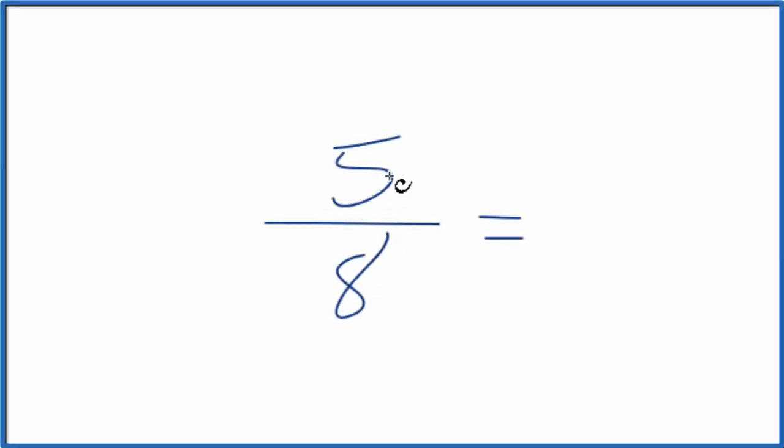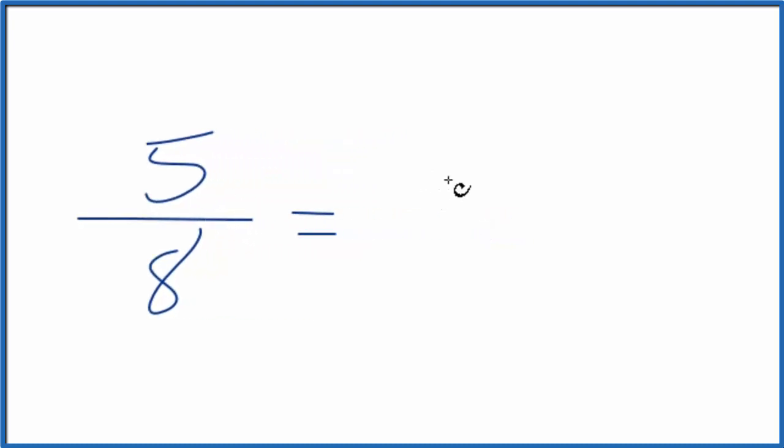In this video we'll write the fraction 5 eighths in decimal form. So we want to know 5 over 8, what is that as a decimal? We could just divide 5 by 8 on our calculator and we'd end up with 0.625. So that's one way to do it.